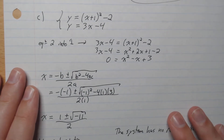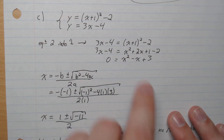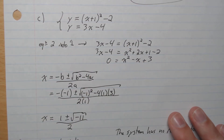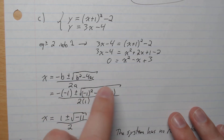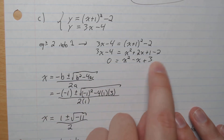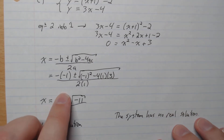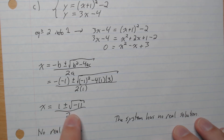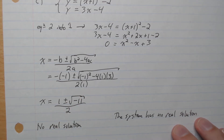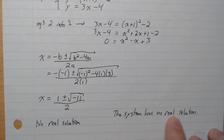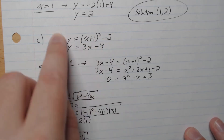Example C: we substitute equation 2 into equation 1 again, expand, and put it all on one side. Using the quadratic formula with a = 1, b = negative 1, c = 3, we get 1 plus or minus the square root of negative 11, all over 2. We cannot take the square root of a negative number in the real numbers, so there is no real solution — therefore this system has no solution.